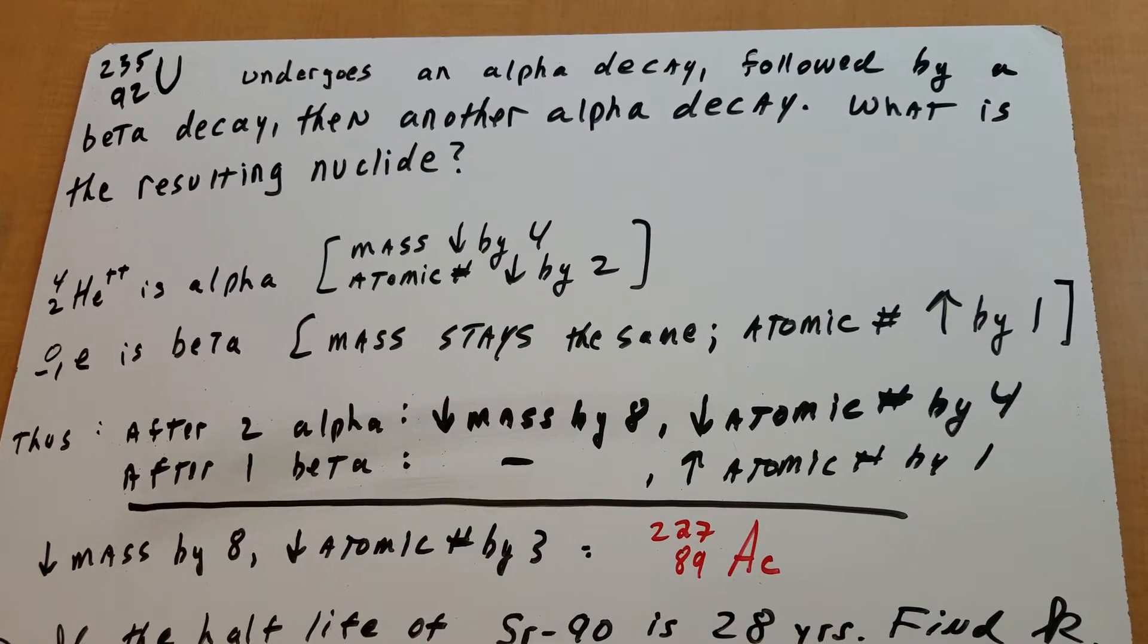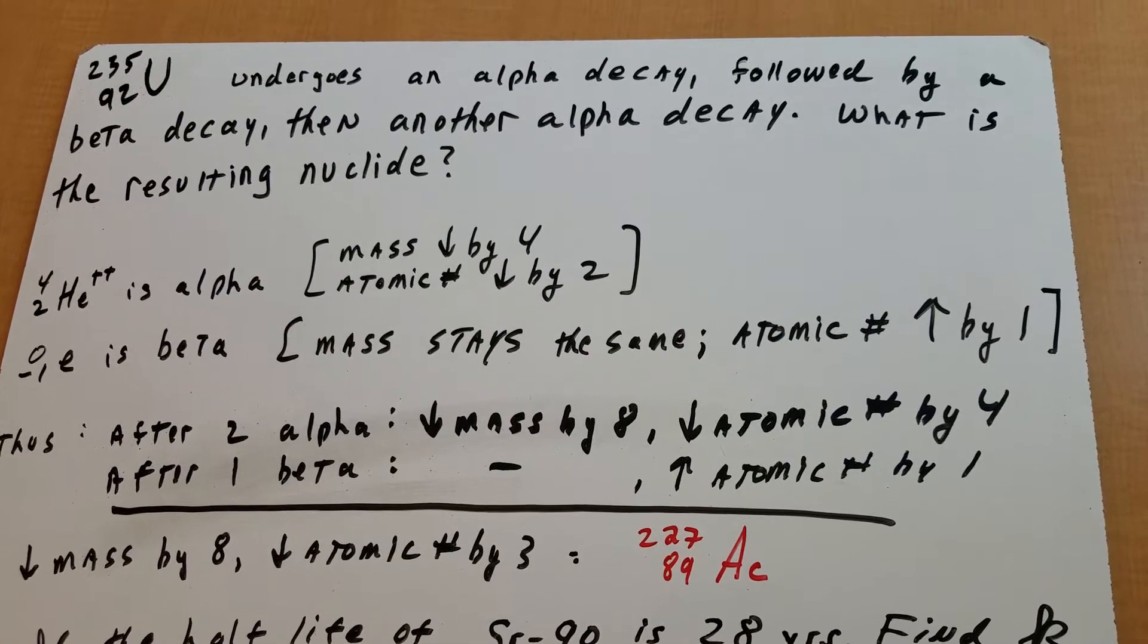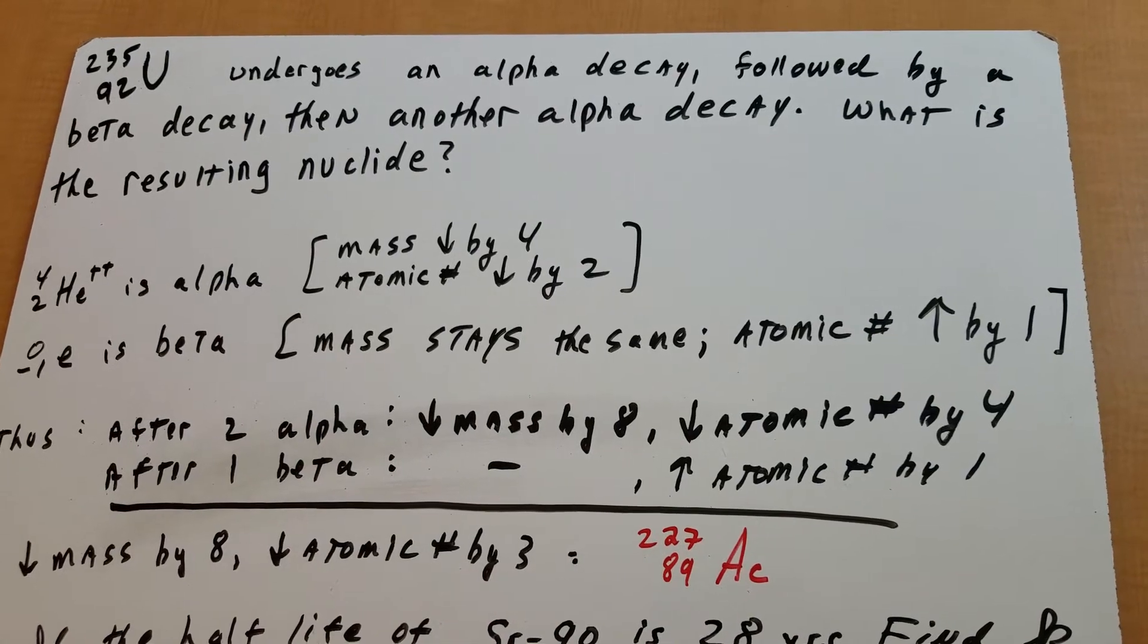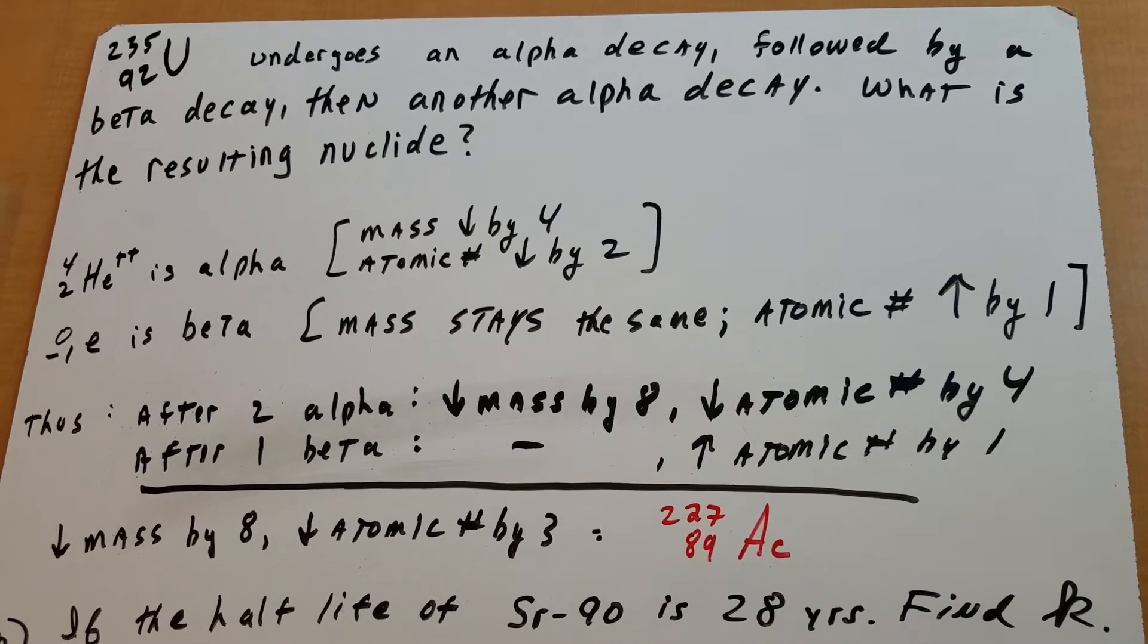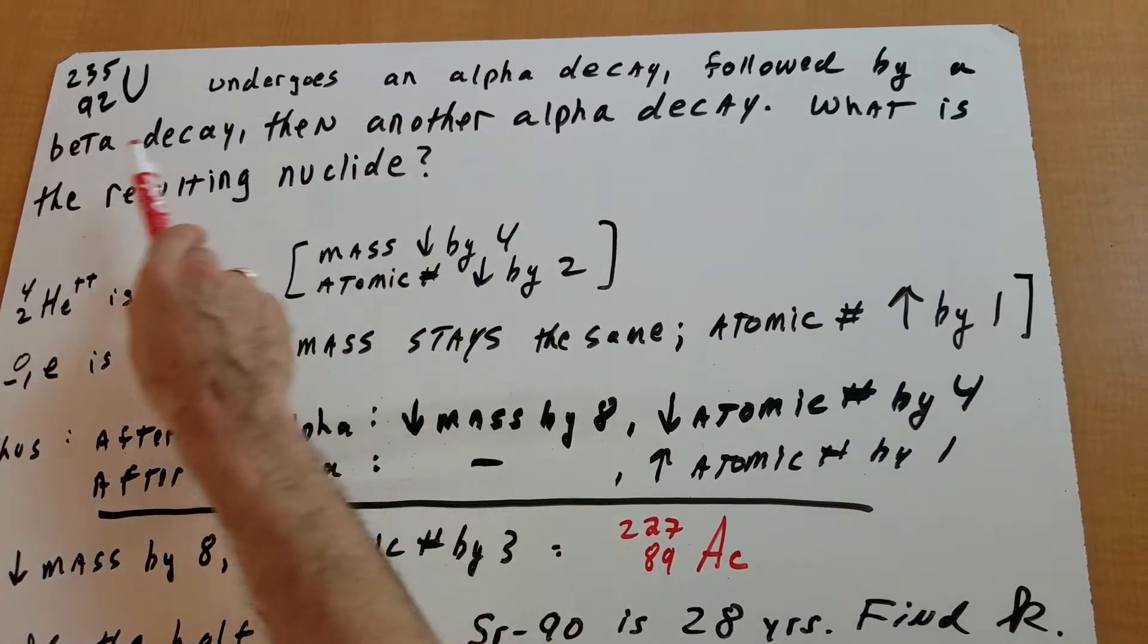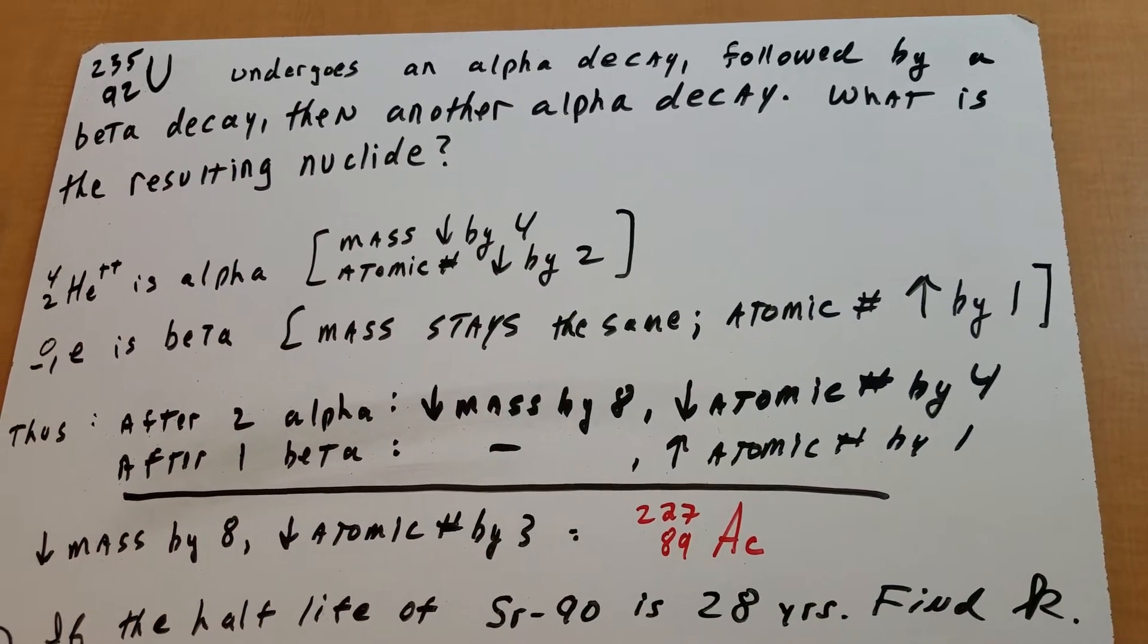In a beta decay, which is nothing more than an electron that's moving at high speeds, the mass will stay the same in a beta decay, and the atomic number increases by 1. So here you have an alpha, a beta, and an alpha, so you have two alpha decays.